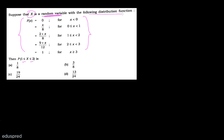We are given that x is a random variable with the following distribution function. The notation given uses capital F of x, which tells us this is a cumulative distribution function (CDF). The second thing to note is that x is a random variable, and we need to identify the probability that includes the equal-to sign.